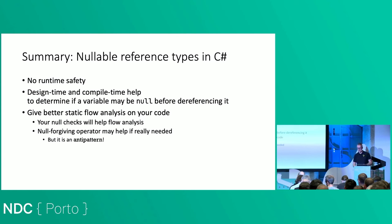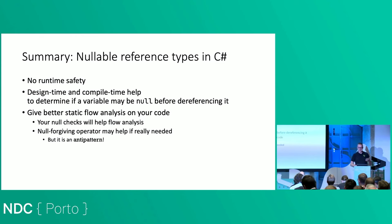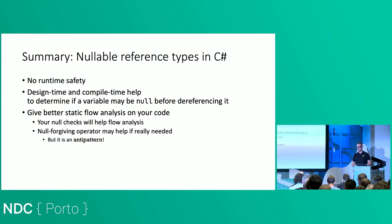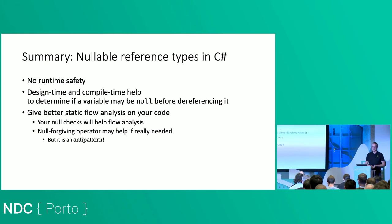In summary: nullable reference types don't give you runtime safety. They give you a feeling of safety while designing and compiling your code — in the IDE and compiler you will get warnings and errors. But what you do get is much better static flow analysis: you will actually see where you should be applying null checks. The null-forgiving operator: use it when you need it, but be careful and ideally use it as few times as possible in your code base.